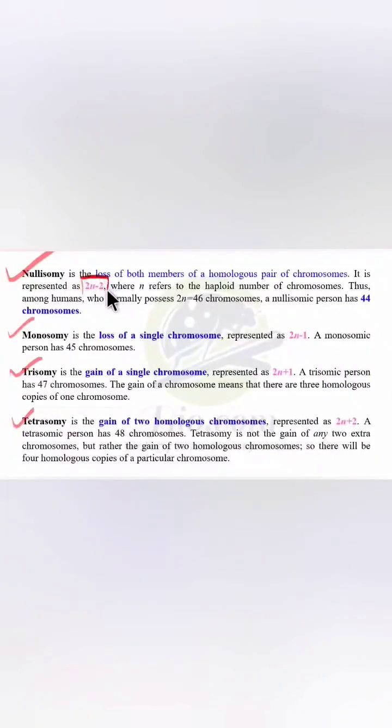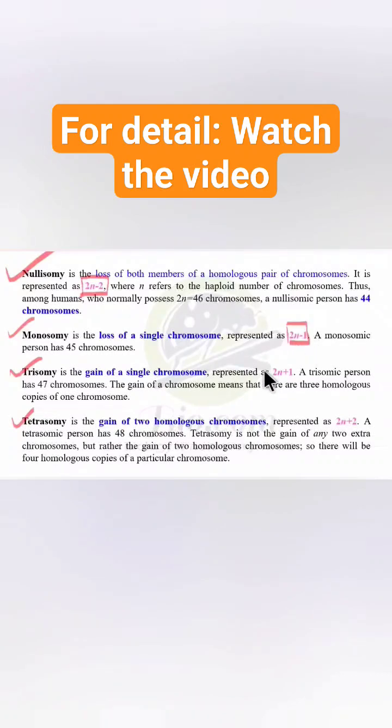For nullisomy, remember the formula 2n-2. For monosomy, remember 2n-1. For trisomy, it is 2n+1. And for tetrasomy, it is 2n+2.